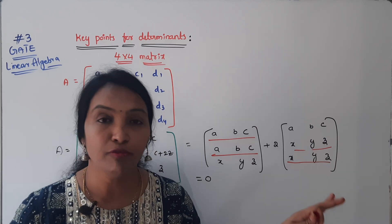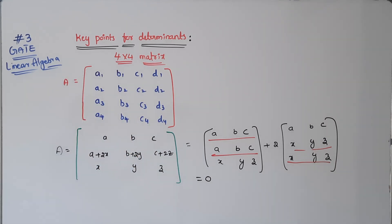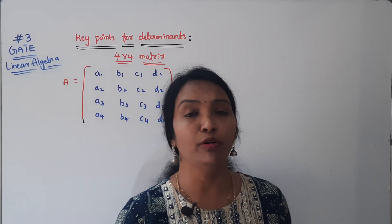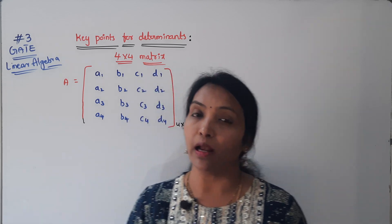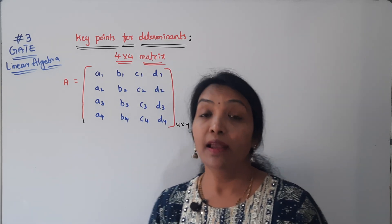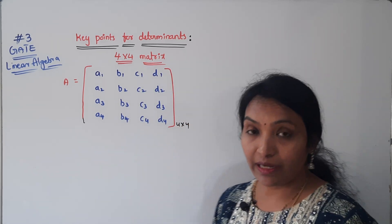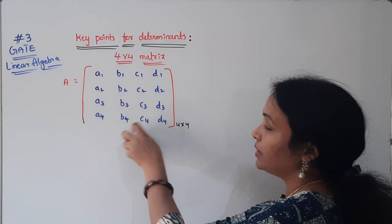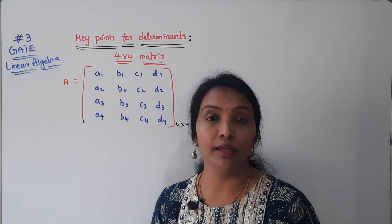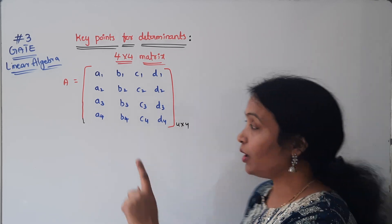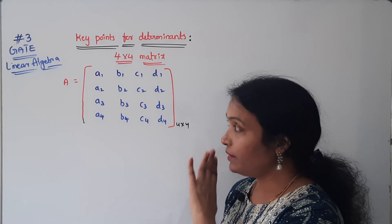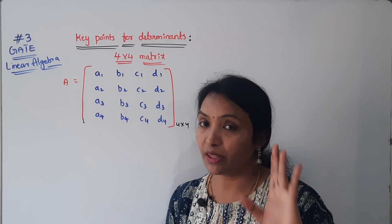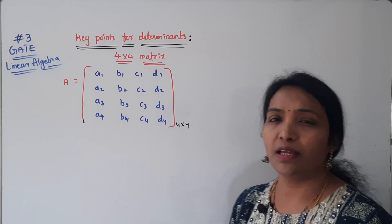Now let's discuss 4x4 — just note the logic. It is clear that we have a 4x4 matrix and we will try to convert it to 3x3. If we have 4x4, each element has a minor, and it is very lengthy. The cross-line shortcut is useful for 3x3 only, so we need a different approach.